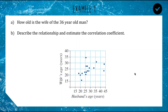We can see a bit of a trend — typically older men have older wives. We have a couple of outliers: there's your cougar value up here — the older woman with the younger husband — and down here we have what's called the cradle snatcher value — the older man with the younger wife.